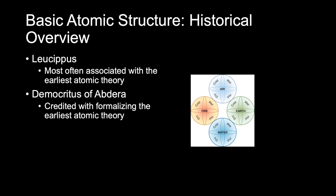For example, sweet things are made of smooth atoms and bitter things are made of sharp atoms. Solids consist of small pointy atoms, liquids of large round atoms, and so on. Such ideas and theories were debated and carried forward for another 2,000 years.